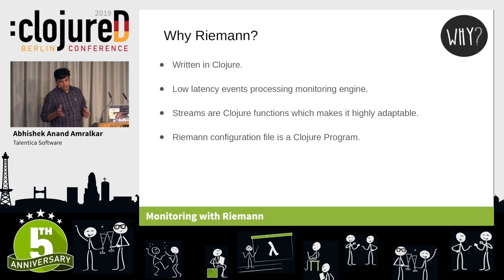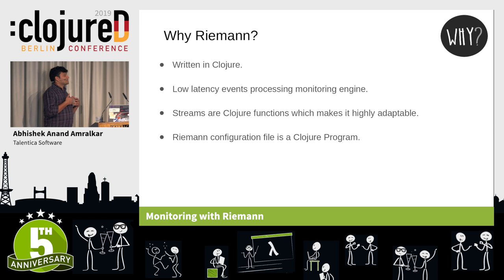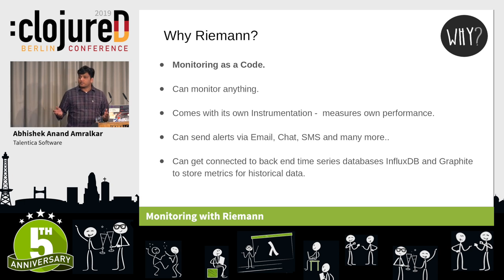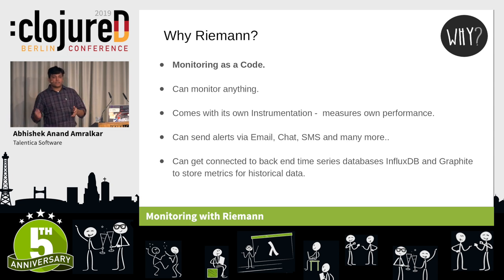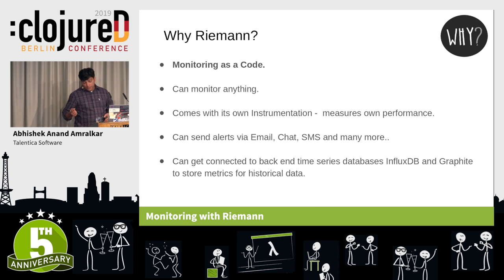When we talk about Riemann, there are three major concepts. Streams are Clojure functions, which makes Riemann highly adaptable. The Riemann configuration file itself is a Clojure program. Another thing we can achieve with Riemann is monitoring as code — you don't need to worry about installing plugins on different monitoring systems. You can write code in Clojure and send it to your Riemann monitoring server, and Riemann can monitor anything: logs, events, custom metrics.